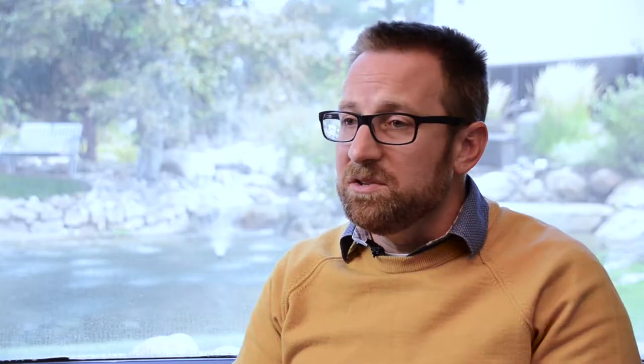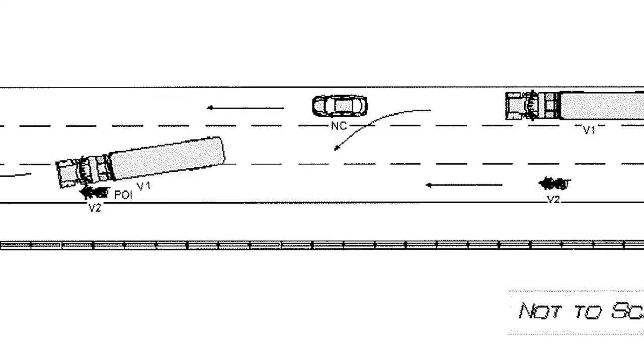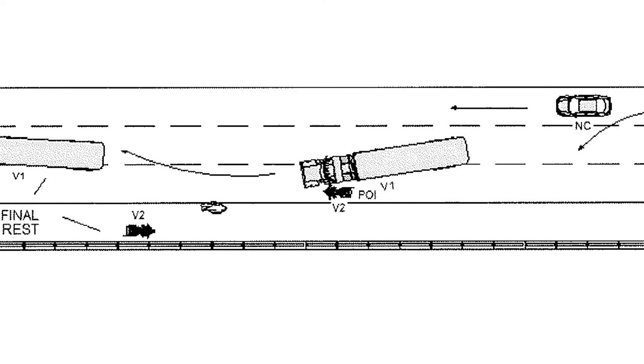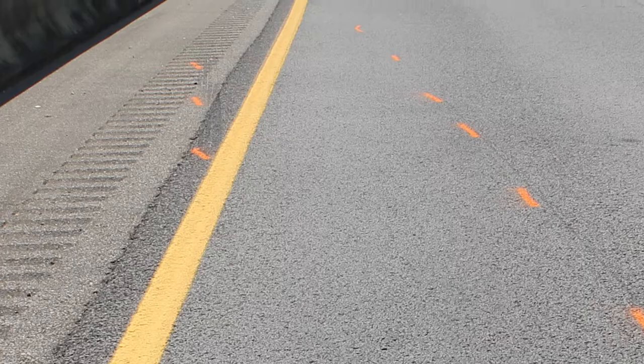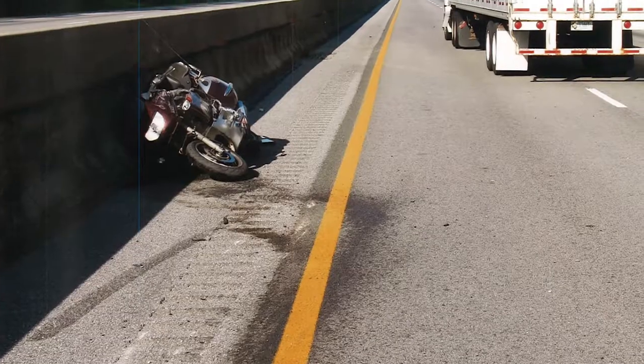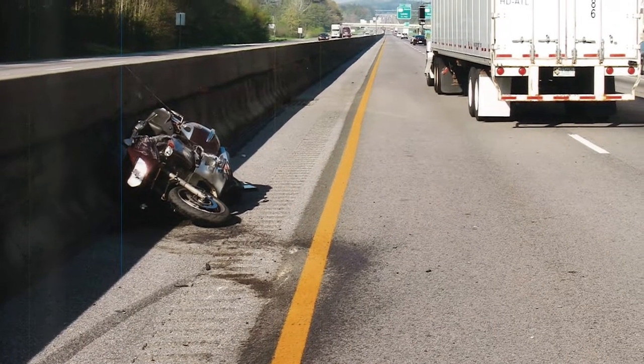The police did do some investigation. They had a basic diagram outlining the sequence of events, photographs showing tire marks and fluid on the road, and the rest positions of the tractor-trailer and the motorcycle. Gathering that evidence was the first step.